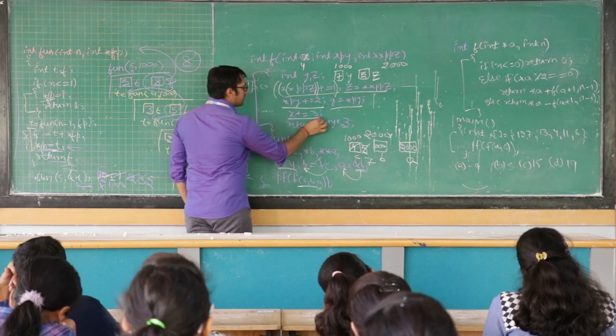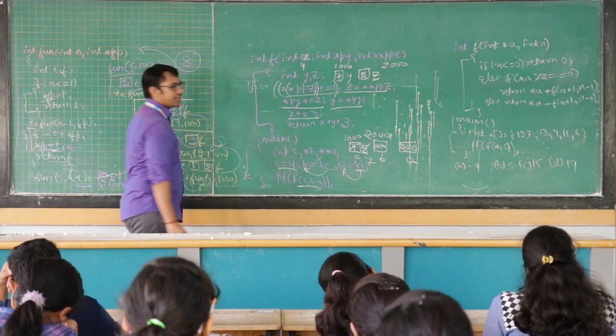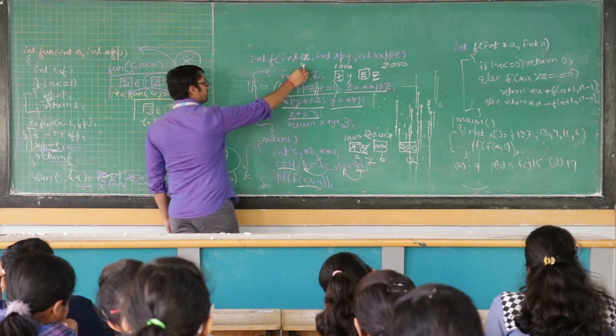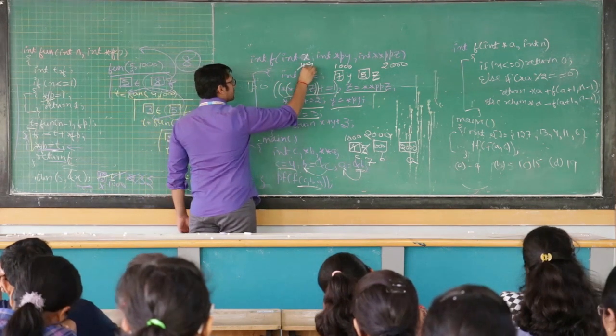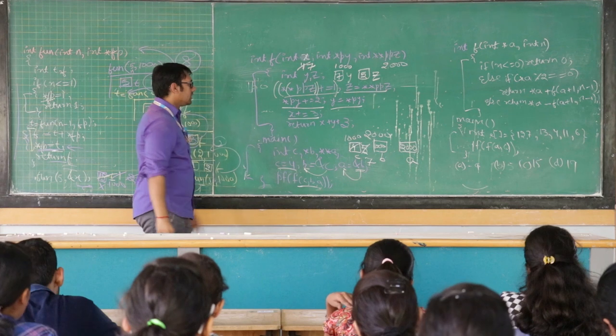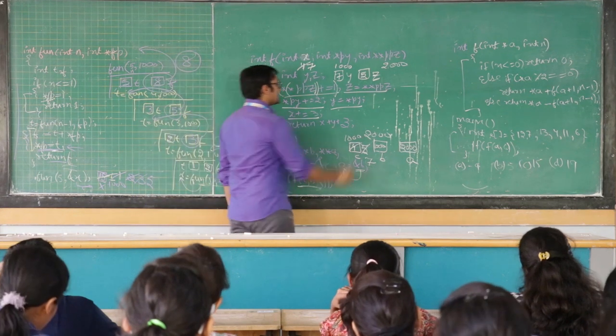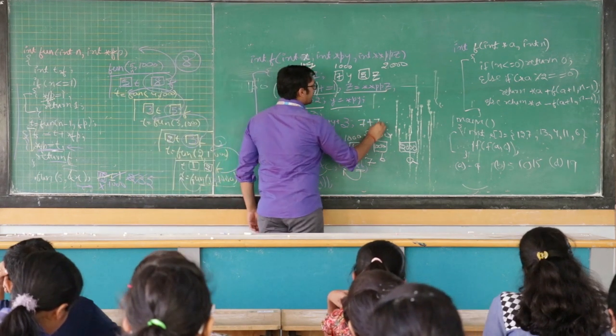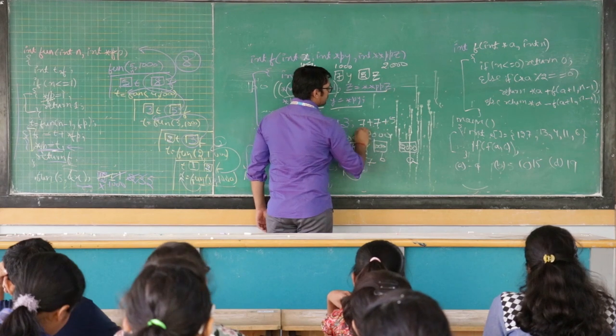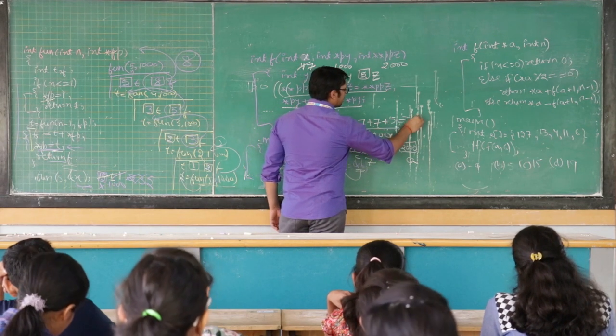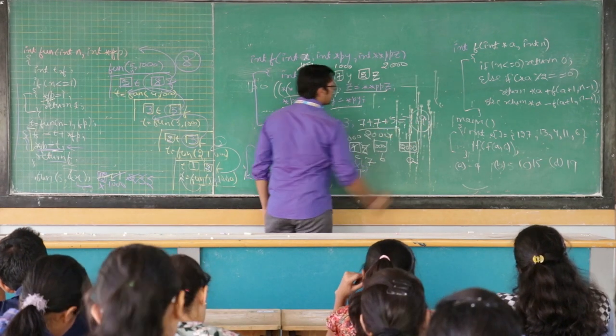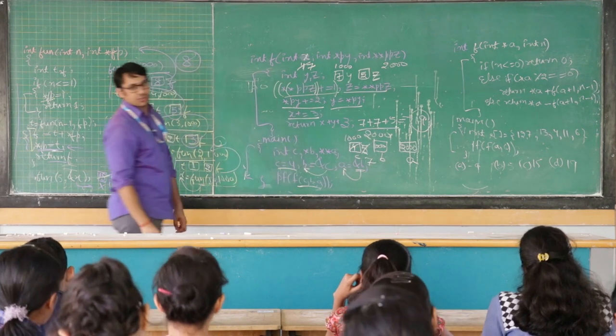And now x plus equal to 3, that means we are incrementing the value of x. Initial value of x was 4, 4 plus 3 is 7. So return x plus y plus z which is 7 plus 7 plus 5, what is this value which is equal to 19. So 19 is the correct answer to this problem.